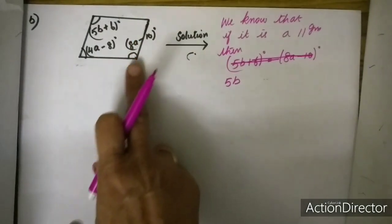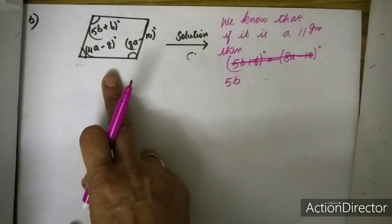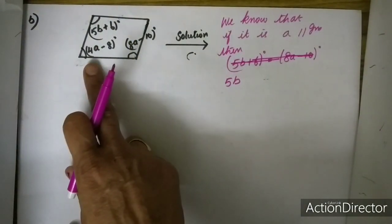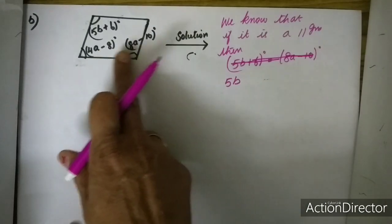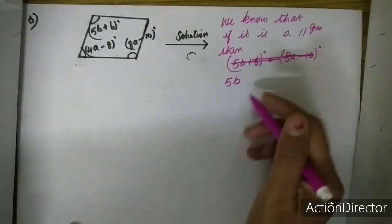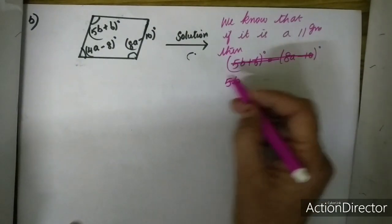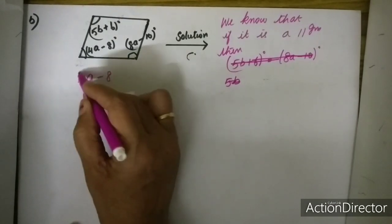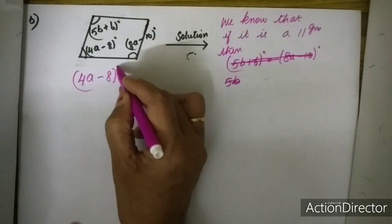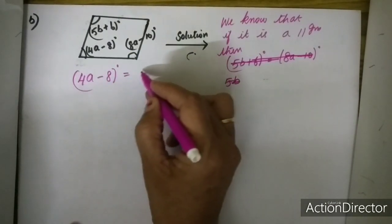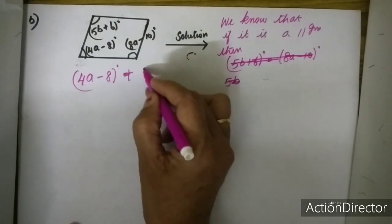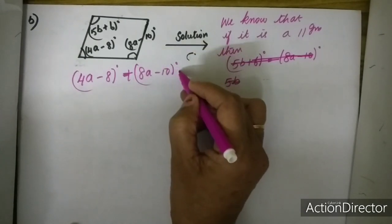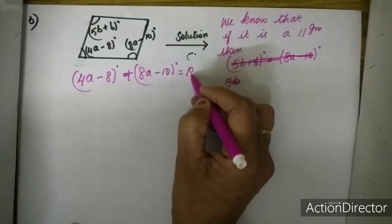Now, to prove this quadrilateral as a parallelogram, I am going to use the property that co-interior angles are supplementary. So I will be writing: 4A minus 8 degrees plus 8A minus 10 is equal to 180 degrees.